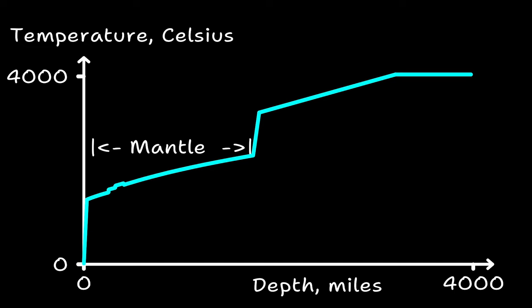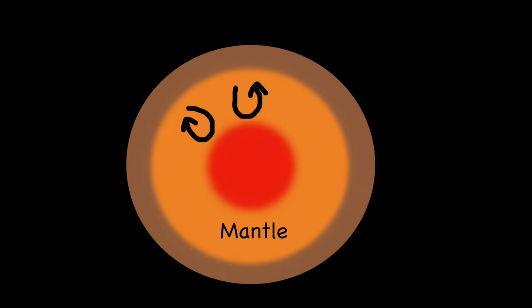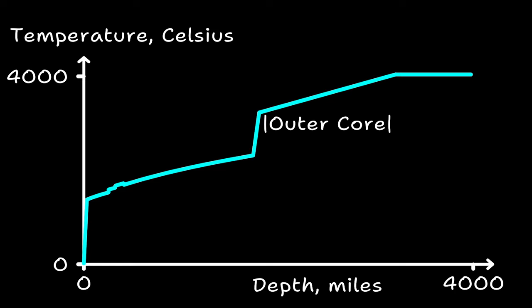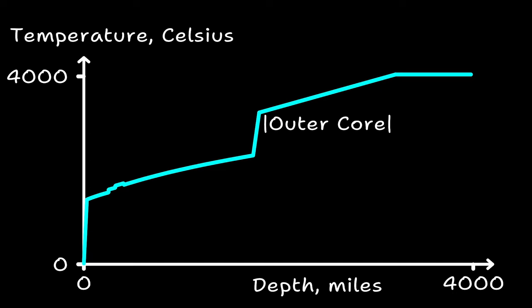On this graph, the x-axis is depth into the earth, and the y-axis is temperature. As we go deeper into the earth, the temperature increases. This first flat section is the mantle. The mantle flows somewhat, which keeps the temperature fairly constant. This second flat section is the outer core, which is molten and also fairly constant in temperature. The core is some kind of iron-rich alloy. At the boundary between these layers, there's a big temperature jump, and similarly near the surface of the earth.